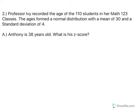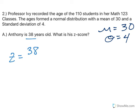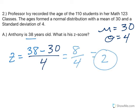Let's go to a new problem. Professor Ivey recorded the ages of 110 students in her Math 123 classes. The ages formed a normal distribution with a mean of 30 and a standard deviation of 4. Anthony is 38 — what's his z-score? Value minus the mean divided by the standard deviation: 38 minus 30 is 8, divide by 4, and we get 2. So he has a z-score of 2.